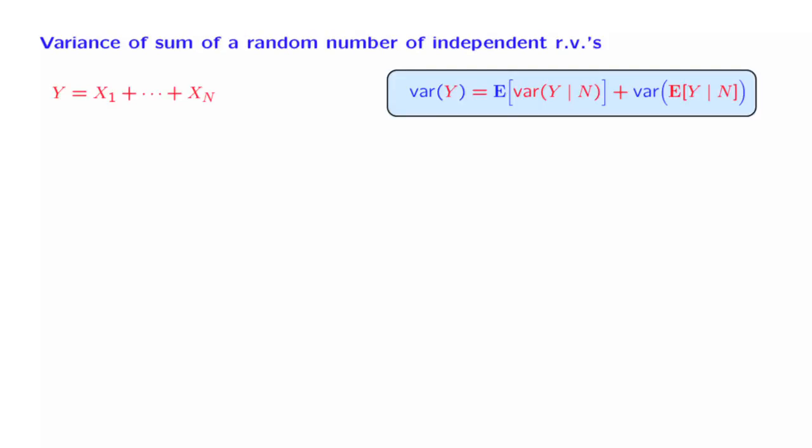We now continue the study of the sum of a random number of independent random variables. We already figured out what is the expected value of this sum, and we found a fairly simple answer.